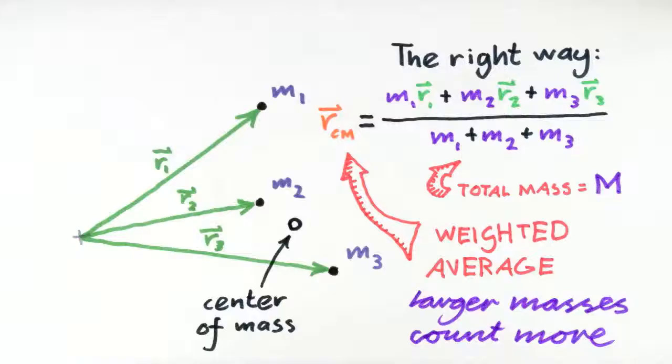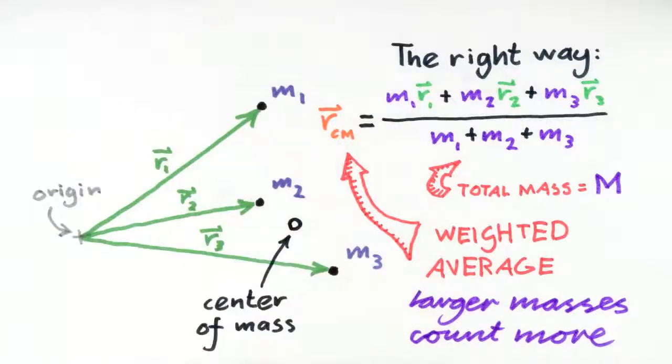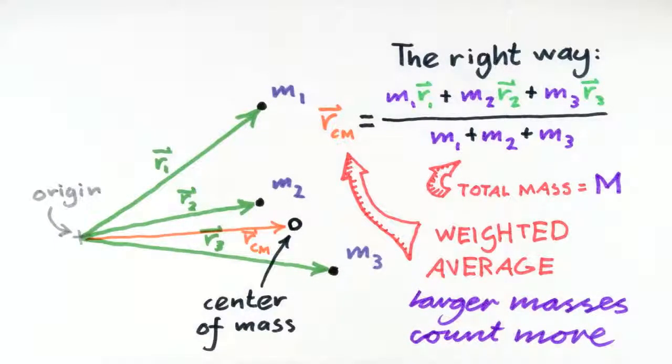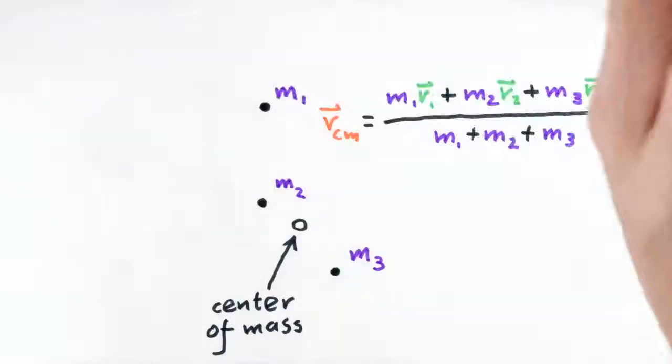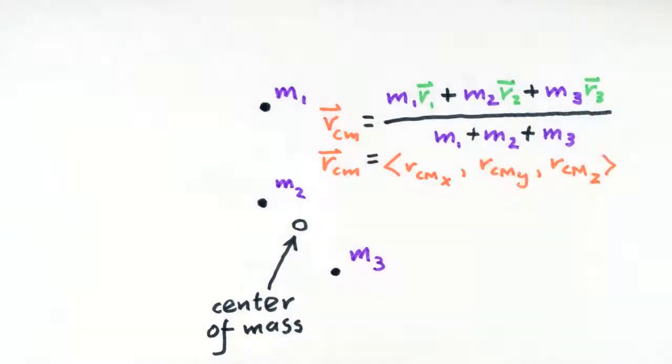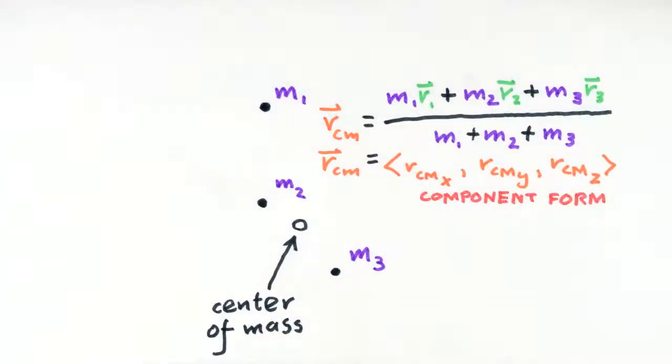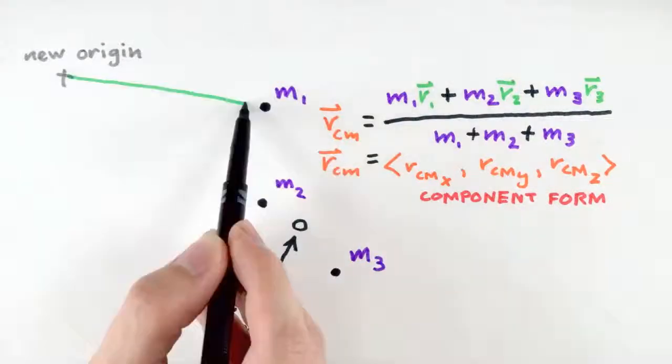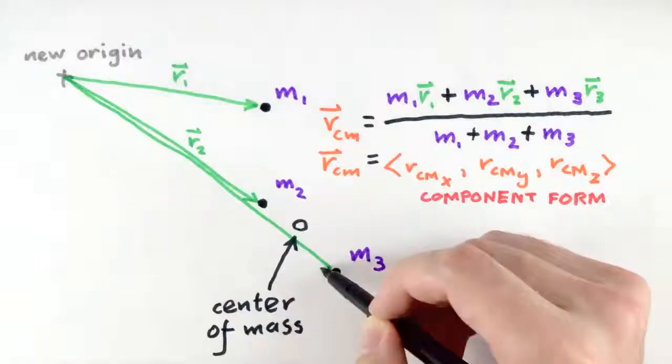For example, here when we specify locations using position vectors, we have already made a choice of coordinate system origin. So the result of our calculation to find the center of mass will be in terms of that coordinate system. We would be free to choose another choice of origin to represent positions. The representations of those positions would change, and the representation of the center of mass would change.